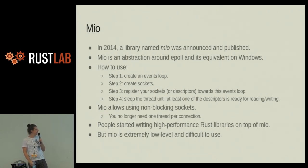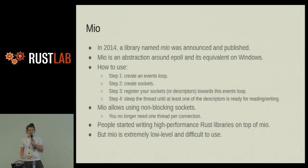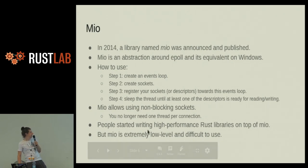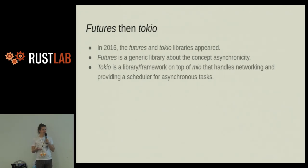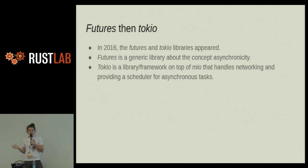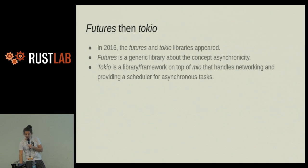People started writing high-performance Rust libraries on top of Mio, which is great, but in practice Mio is extremely difficult to use. Which brings us to 2016 — Futures and Tokyo. Futures is a generic library about the concept of asynchronous Rust. Tokyo is a library slash framework on top of Mio to make this easy to use.